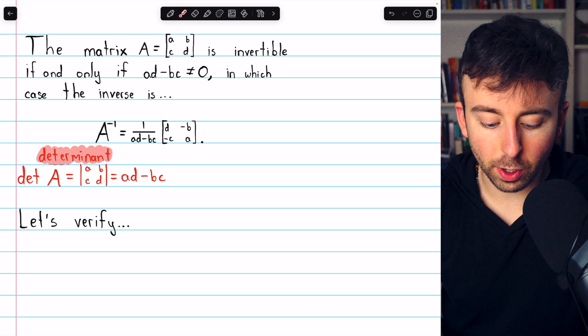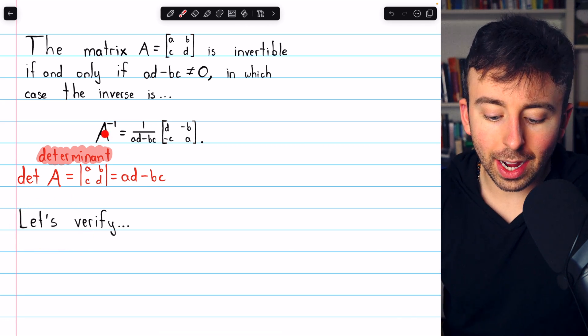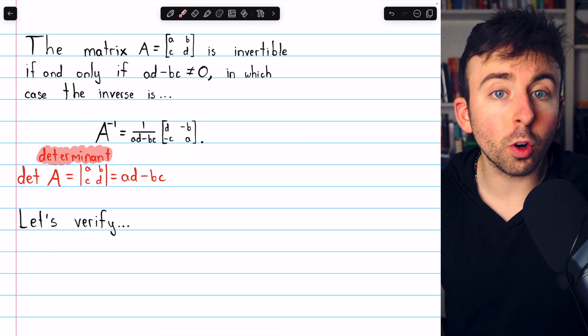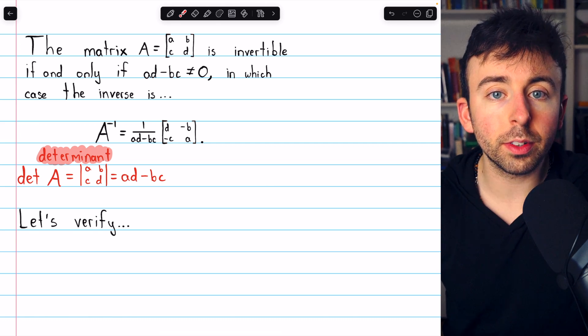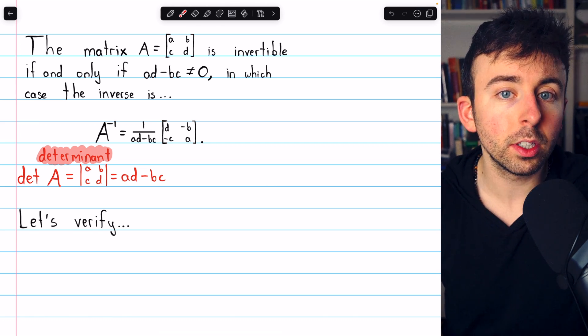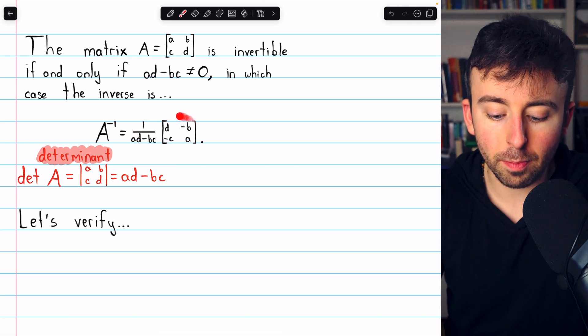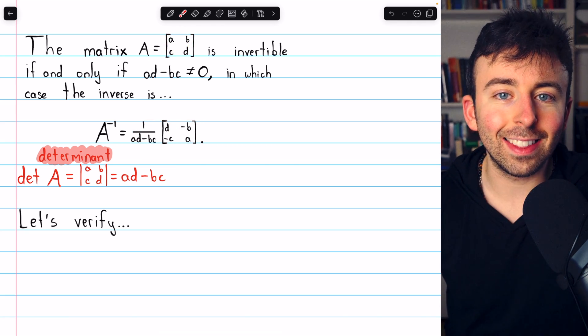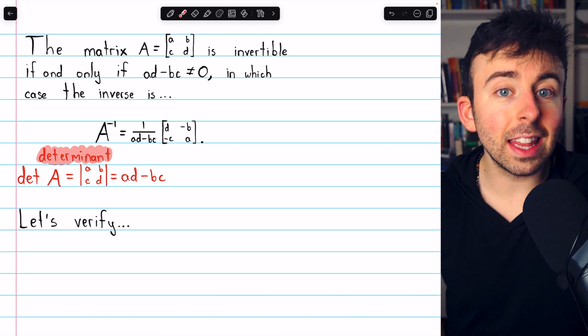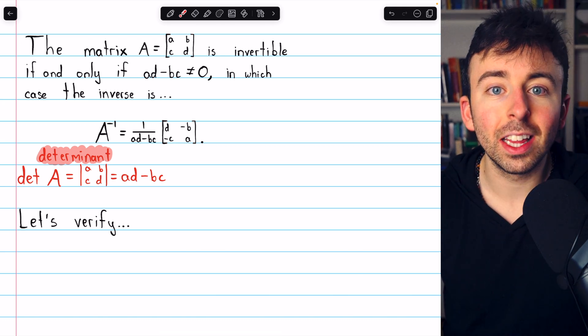That is the determinant of the matrix. Let's go ahead now and verify that this is indeed a correct formula for the inverse of an invertible 2x2 matrix. To do that, we'll just have to take this and multiply it by A on the left, and we should get the identity matrix. And then we'll also have to multiply it on the right.